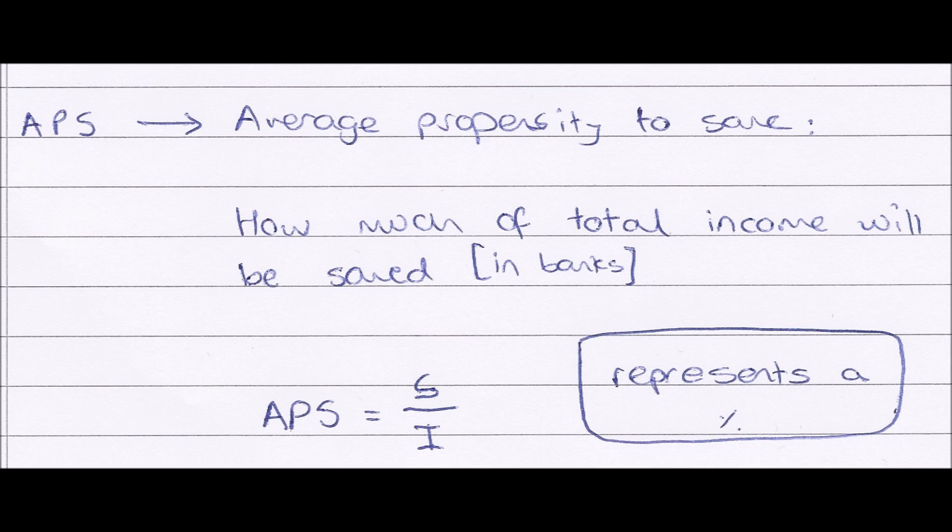Again, this represents a percentage. So if my APS number was 0.05, this would mean that 5% of my total income is being saved.